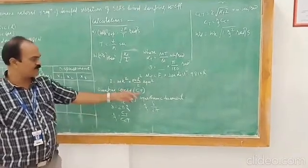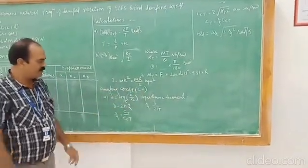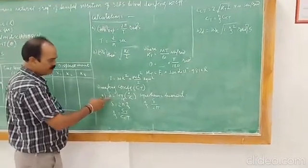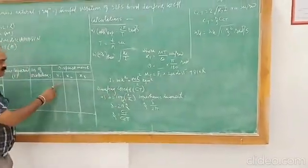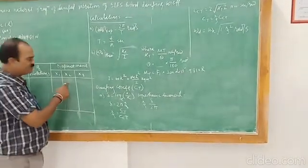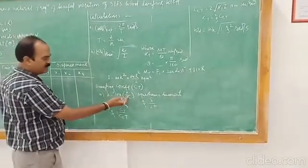Damping coefficient, we can calculate by these equations. First, the delta, logarithmic decrement, we can calculate by the displacement which are given in the observation tables, x1, x2, or x3 you can take, x1 divided by x2.